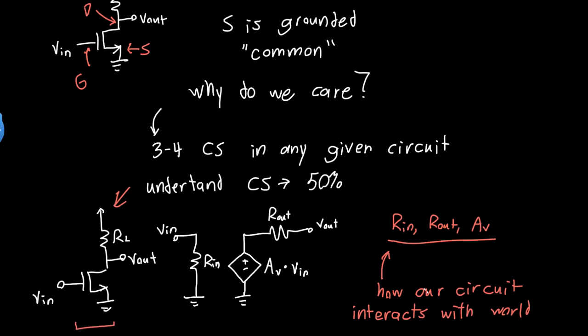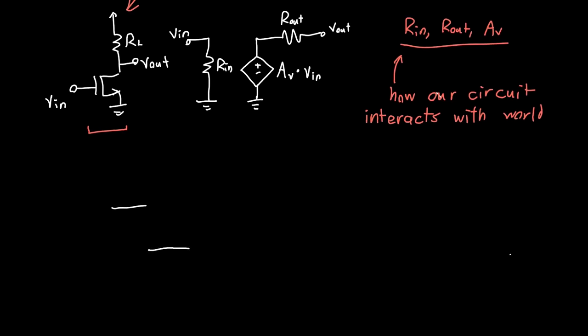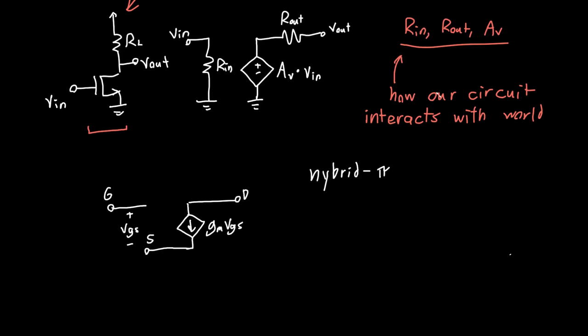When first analyzing these circuits, it's always helpful to draw the small signal model. The small signal model, or hybrid-pi model, of the transistor looks like this: we've got a gm*Vgs voltage-dependent current source, where Vgs is the voltage between the gate terminal and the source terminal, and this is the drain terminal. We can also draw the output resistance ro, though I'm not going to include it here — when initially analyzing things, it's helpful to keep things as simple as possible.